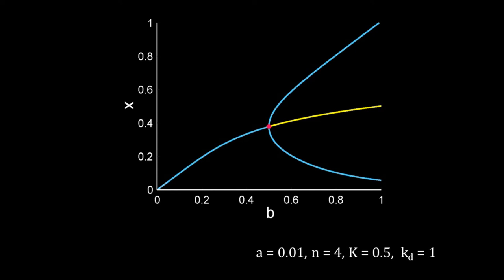But when x is at the higher stable steady state, y remains at the lower one. Suppose initially the value of b is equal to 0.4. At this value of b, the system is monostable. Whatever be the initial condition, cells will move towards the stable steady state with moderate levels of x and y.